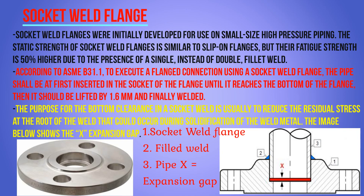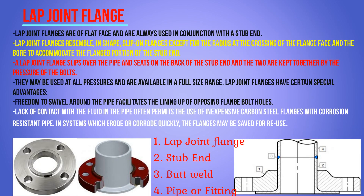After inserting the pipe to the bottom of the flange, it should be lifted 1.6 mm and then finally welded. The purpose of the bottom clearance in a socket weld is to reduce the residual stresses at the root of the weld that could occur during solidification of the weld metal. In the picture, X shows the gap, which is normally 1.6 mm between the pipe and the flange.